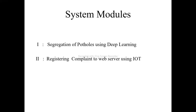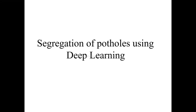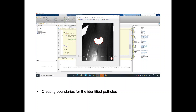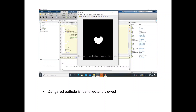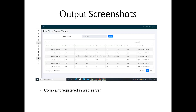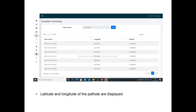There are two system modules. The first is segregation of potholes using deep learning, and the second is registering complaints to the web server using IoT. The output screenshot shows the video processing capturing images, segmenting into frames, creating boundaries around identified potholes, and segregating dangerous from non-dangerous potholes. In the second module, the complaint is registered in the web server along with the latitude and longitude of the pothole.